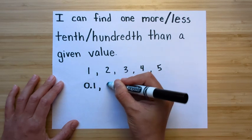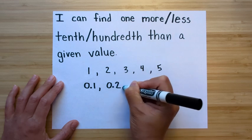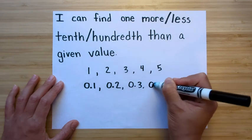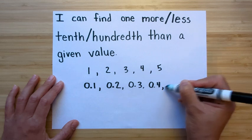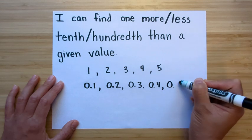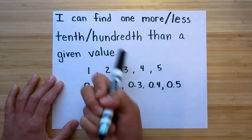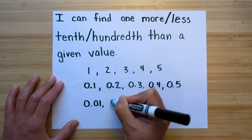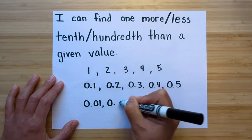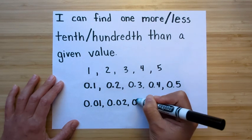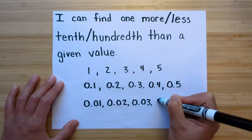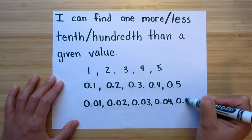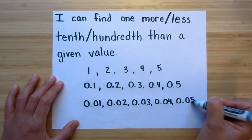So for tenths, it's one-tenth, two-tenths, three-tenths, four-tenths, and five-tenths. Or for hundredths, it's one-hundredth, two-hundredths, three-hundredths, four-hundredths, and five-hundredths.